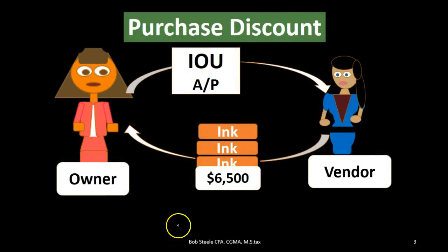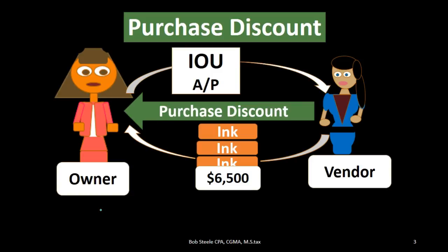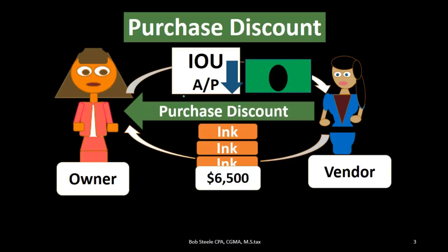Now for the purchase discount — again we're on the left-hand side as the owner, but now we're receiving the discount. The same thing happened but in reverse: we requested the inventory, we've gotten it, and the vendor says if you pay us within a certain time period we will give you a discount. We've put it on the books at the full price. We paid within the discounted period and therefore we get a discount. We adjust our books: the IOU, the amount that we owe, goes down because we paid within the time period, so the amount of money we ultimately pay goes down.